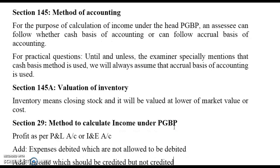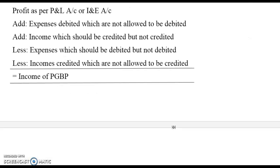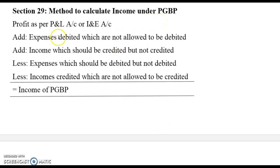Section 29 talks about the method to calculate income under PGBP and is very important. The format starts with the profit figure from the P&L account or income and expenditure account. Then we add back all expenses which were debited in the accounts but are not allowed to be debited by the IT Act, since those must be added back to your profits.